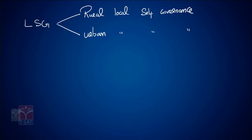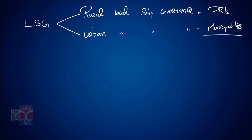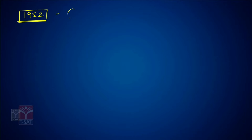Rural local self-governance is called Panchayati Raj Institutions and urban local self-governance is called municipalities. Let us discuss the evolution of rural local self-governance in India. Firstly, in 1952, the Government of India started the Community Development Program. The main aim was to develop a village as a community — eradication of poverty, ensuring employment, and increasing the standard of living of the poor.